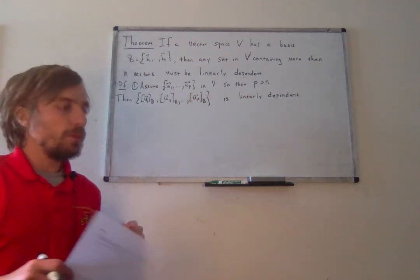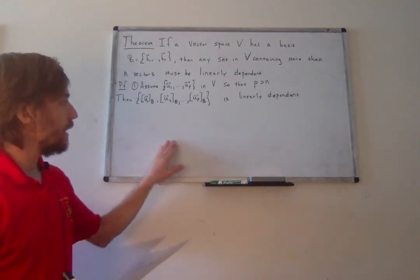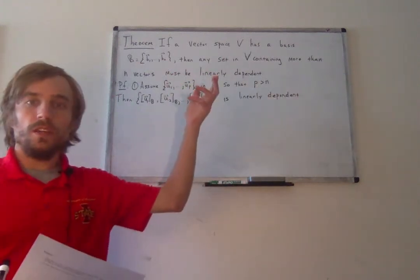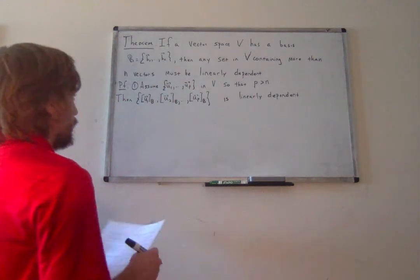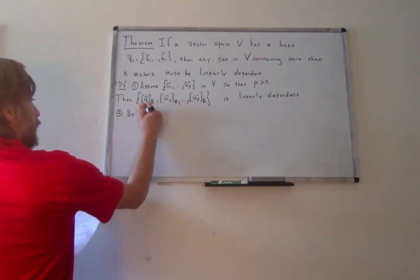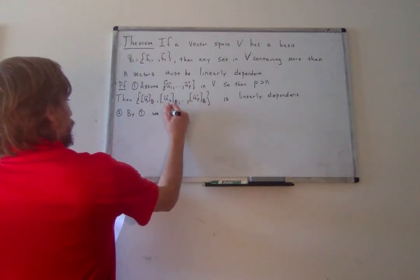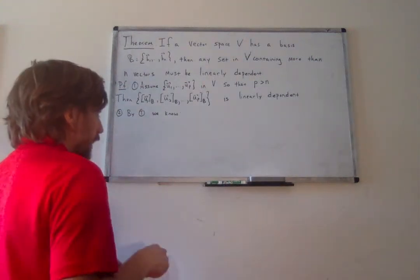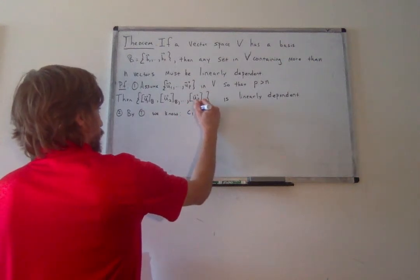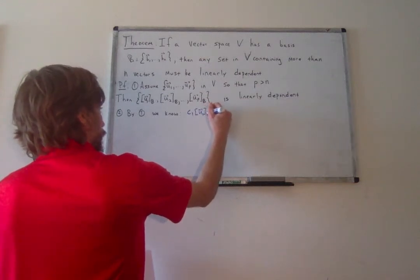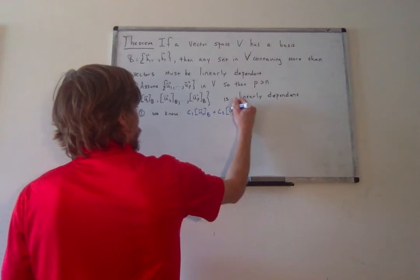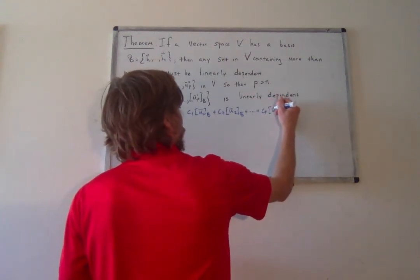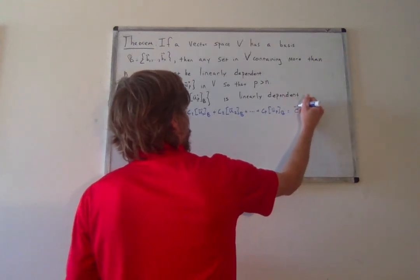How can we show that the original set is linearly dependent? Interestingly, we're proving the general result by working our way back to the mirrored result in Rn that we already know. So for the second step: by the first step, we know that since these are a linearly dependent set in Rn, this means I can find a dependence relation — a set of scalars c1 through cP — such that the sum is equal to the zero vector.